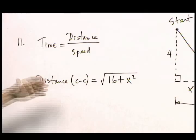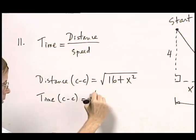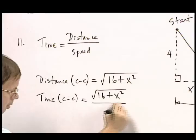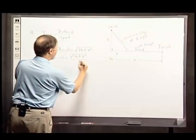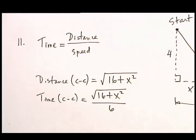Well, remember time is distance divided by speed. So the time associated with the cross-country piece is the distance divided by the speed, which is 6 miles per hour. So there's part of the problem. Okay, there's another piece though: the distance that the person has to run on the road.